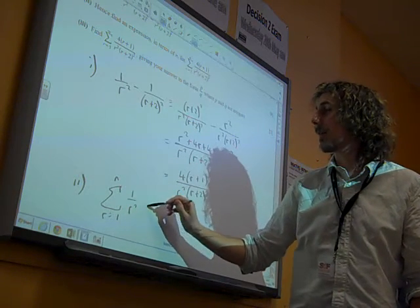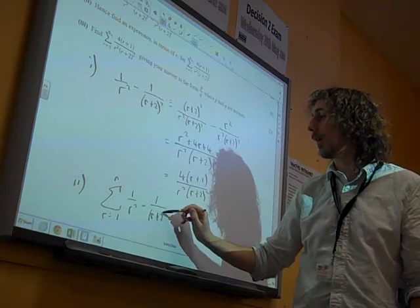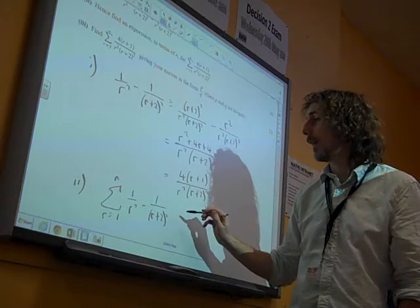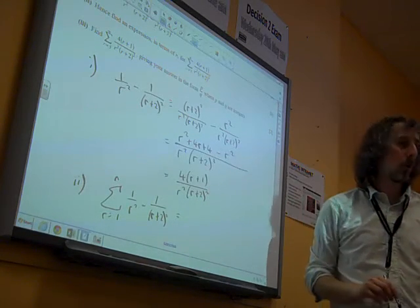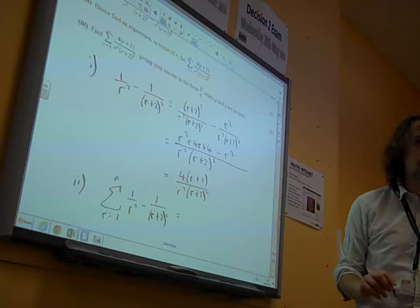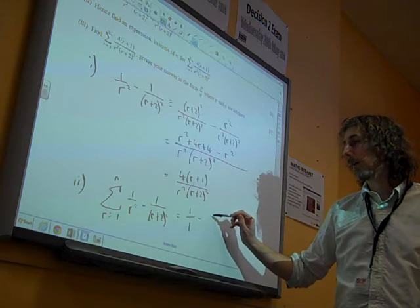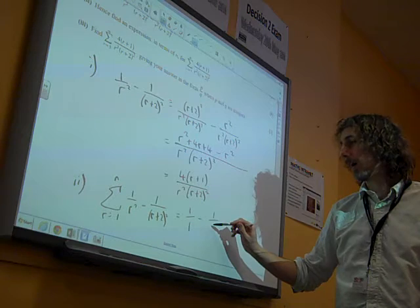Of 1 over r squared minus 1 over r plus 2 squared. But the added complication, which you will have spotted, it didn't just drop out super easy, did it? So that's 1 over 1 minus 1 over 3 squared,